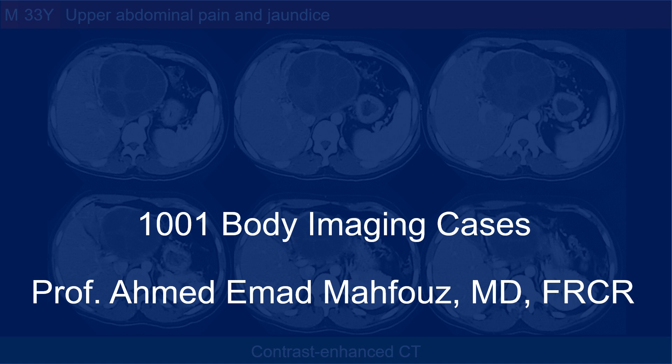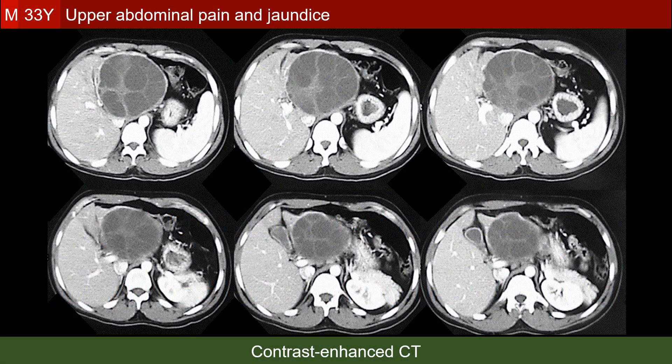Welcome to the body imaging cases. This is a young man with upper abdominal pain and jaundice. CT revealed a multi-locular cyst of the left lobe consistent with an echinococcal cyst. It also showed enhancement of the gallbladder wall, but no other signs that may explain the clinically evident jaundice.